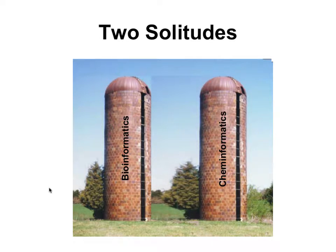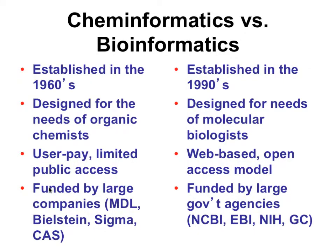One thing that became quite evident, especially in the early days of metabolomics, is that there were bioinformatics specialists and people called cheminformatics specialists, and they really didn't talk to each other. Cheminformatics is actually a very old discipline, established mostly by commercial enterprises in the 1960s, developed to work primarily with organic chemists, partly through the American Chemical Society. The result was user-pay systems with very limited public access. Large companies — MDL, Blistain, Sigma, Wiley, and the Chemical Abstract Service — all established the concepts behind cheminformatics.